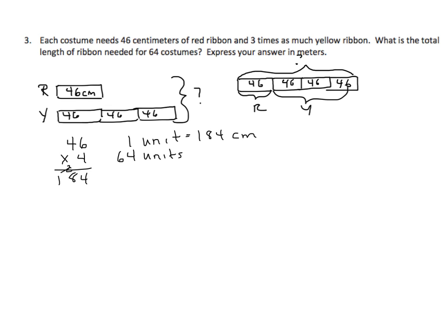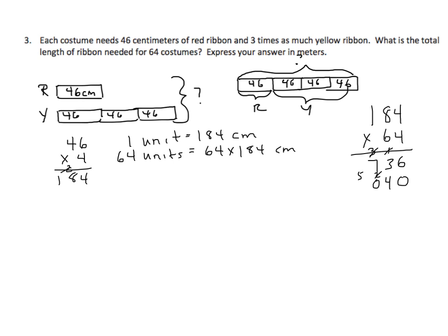64 units equals 64 times 184 centimeters. Let's do the math: 184 centimeters times 64. Multiplying from the ones place: 4 times 4 is 16, regroup the 1. 4 times 8 is 32, plus 1 is 33, regroup the 3. 4 times 1 is 4, plus 3 is 7. Multiplying from the tens place, insert our zero: 6 tens times 4 ones is 24 tens, regroup the 2. 6 times 8 is 48, plus 2 is 50, regroup the 5. 6 times 1 is 6, plus 5 is 11. We'll find the sum.